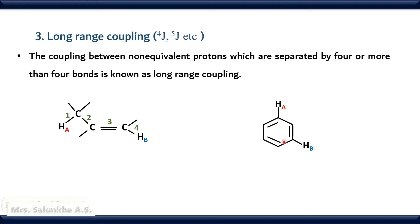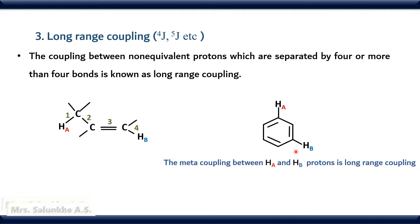For example, consider a benzene ring. HA and HB are non-equivalent protons. When they are at meta-position, that meta-coupling is of the type long-range coupling, because HA and HB are separated by four bonds — this is ⁴J coupling. If HB proton is present at para-position, then that coupling is ⁵J coupling or para-coupling, and this is also of the type long-range coupling.